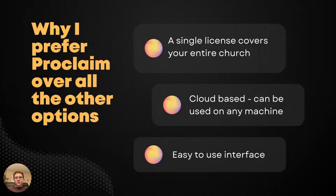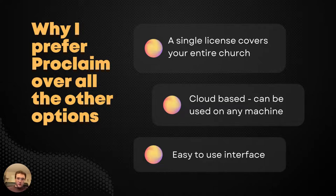Here's why I prefer Proclaim over all the other options. Number one is that a single license covers your entire church. One license can be used across the entire church — in Sunday school classes, small groups, Sunday morning service, Wednesday service — all services can be used concurrently. It can be installed on unlimited machines. And Proclaim is cloud-based, so it can be installed on as many machines as your church owns.